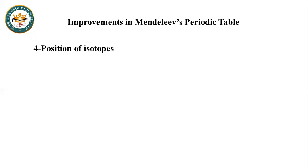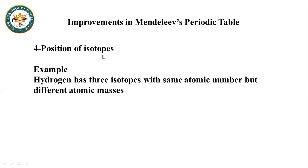Another main problem solved was the position of isotopes. Because isotopes have the same atomic number but different mass numbers, if arrangement were based on atomic mass, hydrogen — which has three isotopes — would appear three times in the periodic table. Since atomic number is the same for all isotopes, isotopes are assigned the same position in the periodic table.